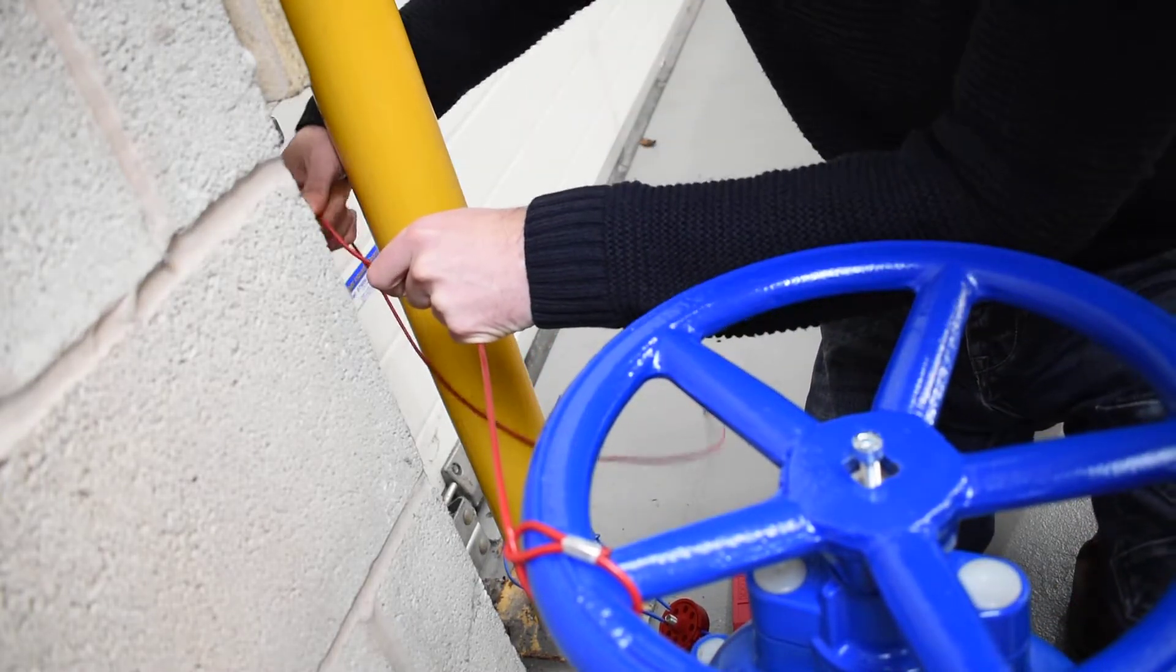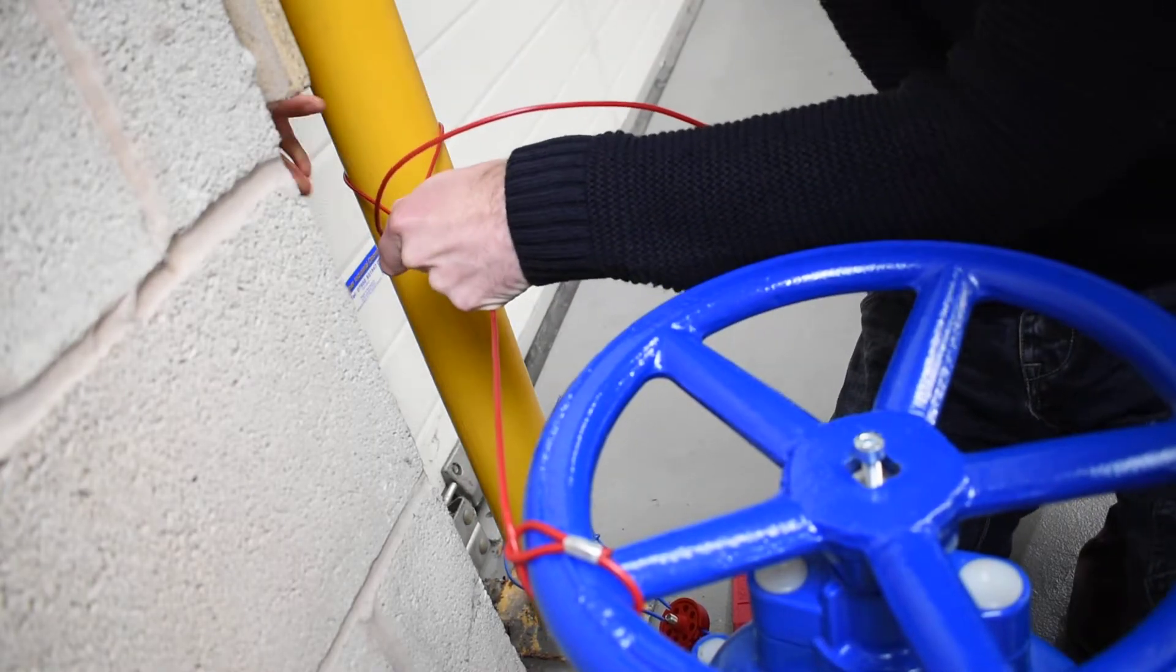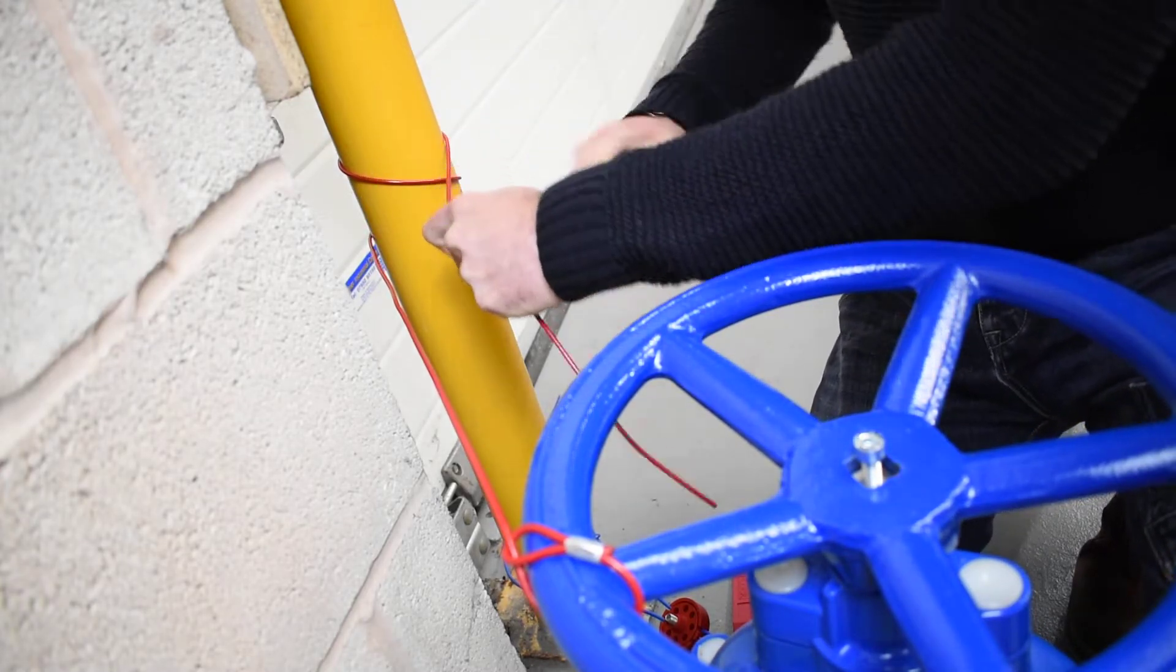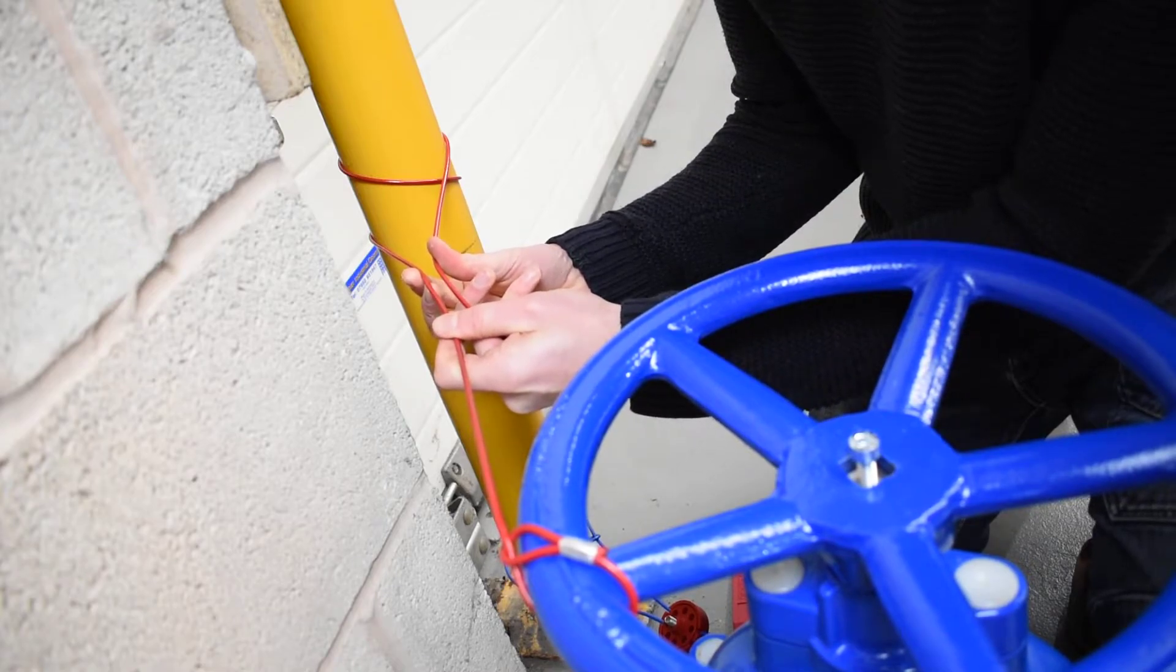We simply pass this wire around the fixing point like so, once or twice is fine. Pull it nice and tight and then in this area here is where we'll be fitting our ProLock device.